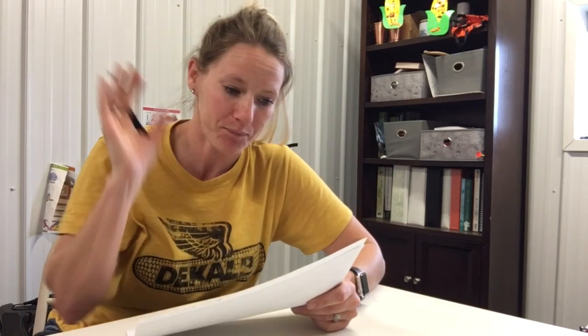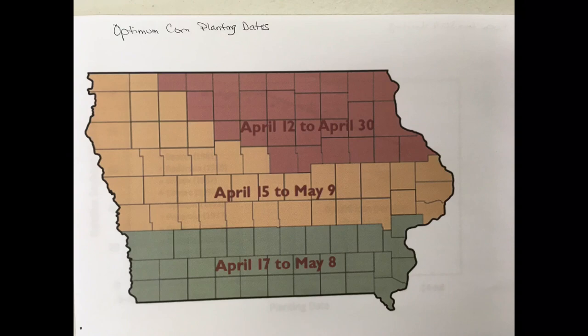Now we need to determine crop priority. Do we continue with the early soybeans even though we aren't really early planting yet? Or do we abandon the beans-first attitude and prioritize our corn? Or are we missing out on all that extra yield potential from getting our beans in the ground on time? So let's first look at the breakdown of where you're living. This is the optimum corn planting date map put out by Iowa State University Extension. That north central to northeast Iowa optimum corn planting date is April 12th to the 13th.